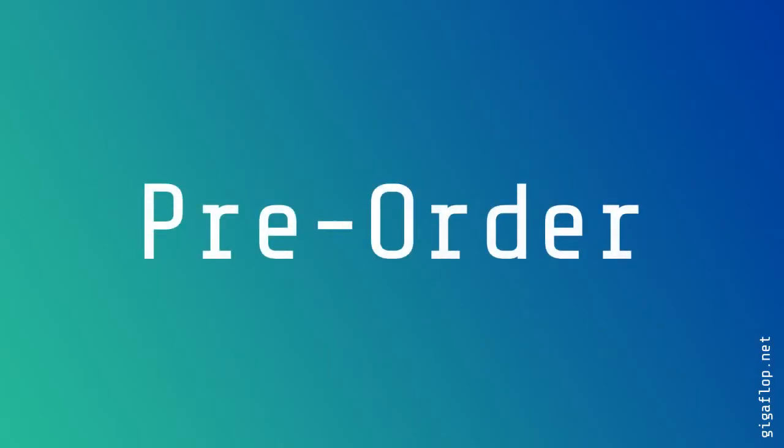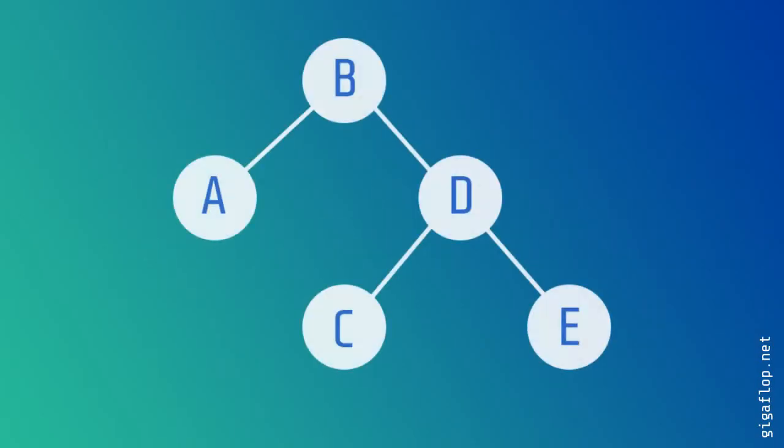In this video we're going to be looking at pre-order traversal on a binary tree. So here's our binary tree and we're going to draw a line around it starting from the top left and we're going to write down the nodes as we pass to the left.